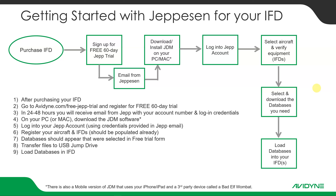After purchasing your IFD, you're going to go to the Avidyne website and sign up for the free 60-day Jepp trial. Within 24 to 48 hours, you'll get an email from Jeppesen with your login credentials and a link to download the JDM app onto your PC or Mac. Once you get your email from Jepp, you go download JDM on your PC and log in with the credentials it gives you, which is your email address, and they'll provide you a temporary password.